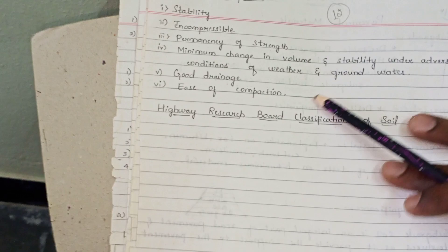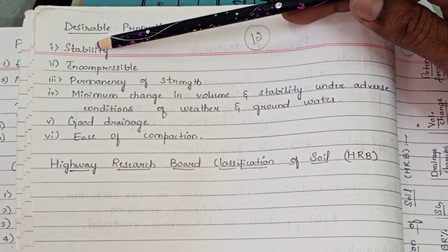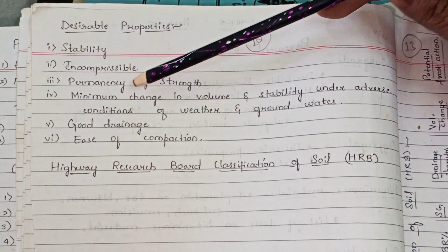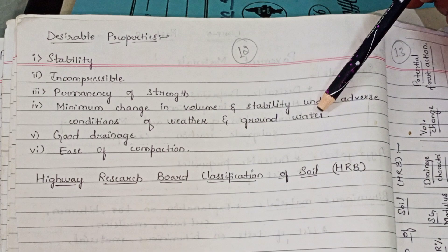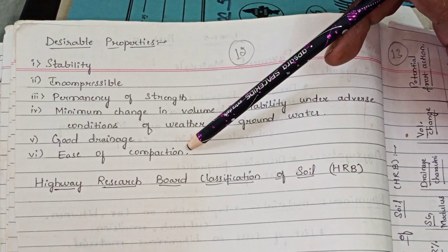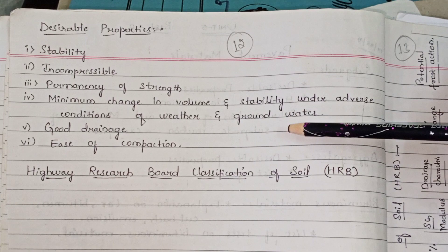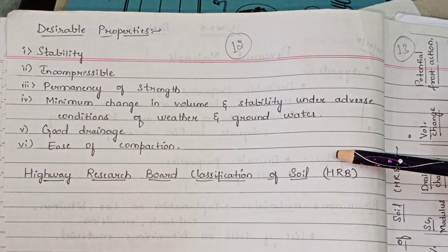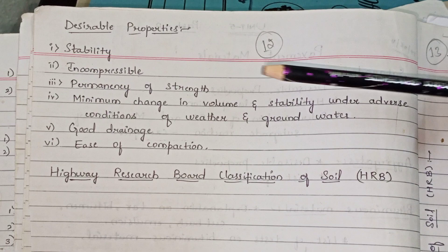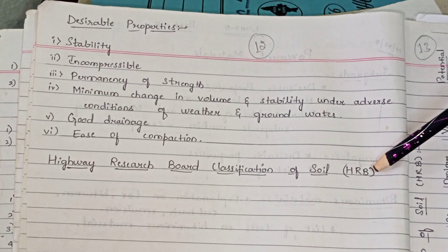Desirable properties of soil: stability, incompressibility, permanency of strength, minimum change in volume and stability under adverse weather and groundwater conditions, good drainage, and ease of compaction. Methods of classification of soils include the structure method, compound method, Casa Grande method, and California method. For our syllabus, Highway Research Board classification of soil is important — that is, HRB classification of soil.